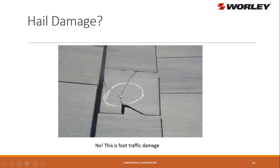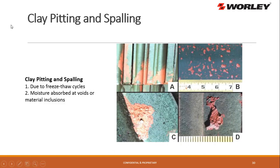Also be aware of clay pitting and spalling due to freeze and thaw cycles. Moisture absorbs into the voids of the clay or concrete, then boils out and pits the tile. Here's a good example of pitting where moisture got in and pitted the tile. Spalling can also occur when the nail corrodes, rusts, and pops the tile out.